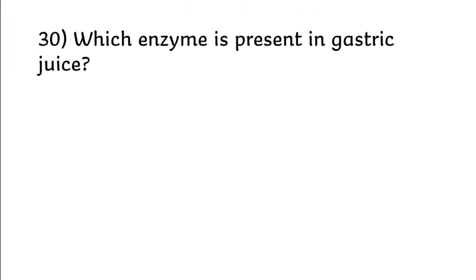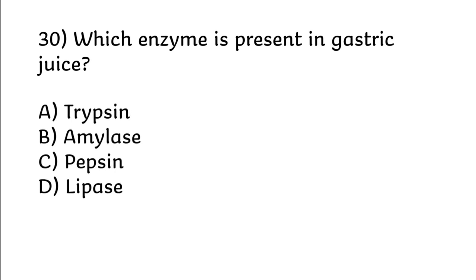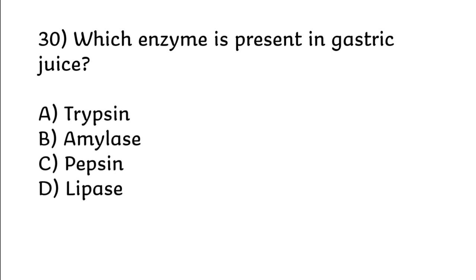Which enzyme is present in gastric juice? Trypsin, amylase, pepsin, lipase. Correct answer is Option C: Pepsin.